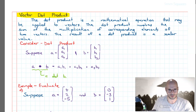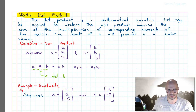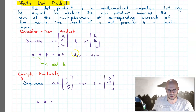Welcome to this video on the topic of vectors. In this video we're going to have a look at how we can use our technology to aid us in calculating the dot product of two vectors. The dot product is a mathematical operation that may be applied to two vectors — it involves the sum of the multiplication of corresponding elements of two vectors. The result of a dot product is a scalar value.